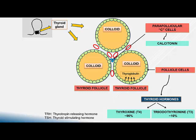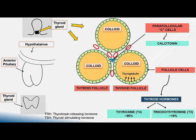Before discussing synthesis, we will have a quick look at the regulation of thyroid hormone synthesis. T3 and T4 production is stimulated by TSH, or thyroid stimulating hormone (thyrotropin), which is released from the anterior pituitary in the brain. TSH synthesis and release in turn is stimulated by TRH, or thyrotropin releasing hormone, which is released from the hypothalamus in the brain.